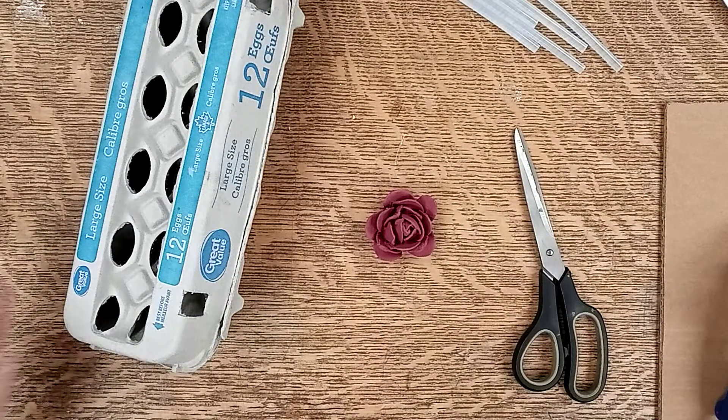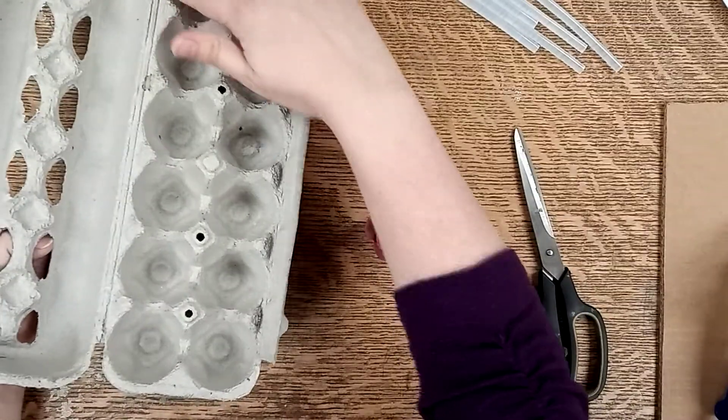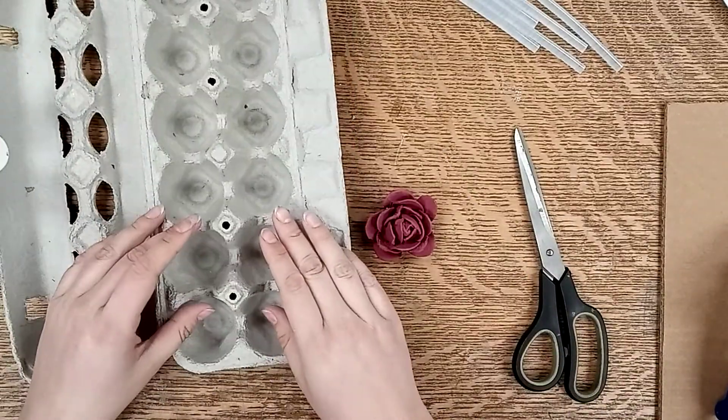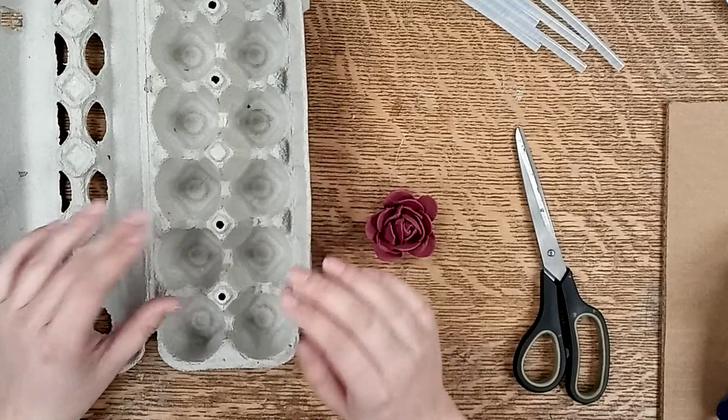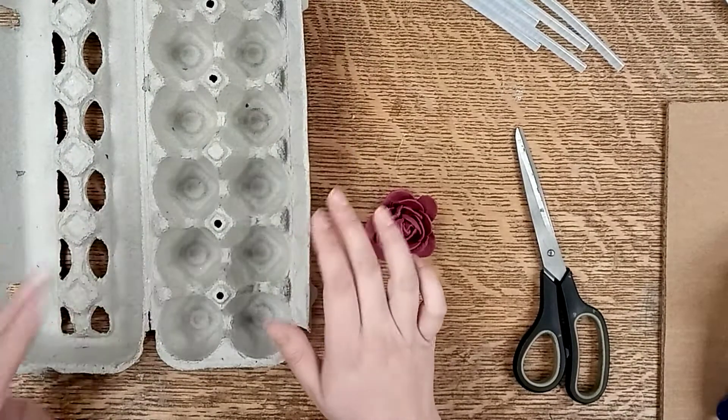So the first thing you need to do is take your egg carton and cut off the lid and cut out four egg cups. You need four egg cups per rose. So for one egg carton you can make three roses.